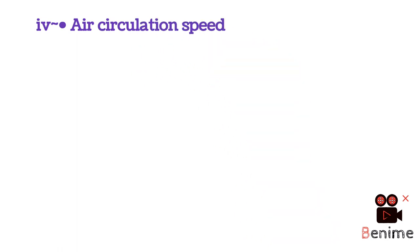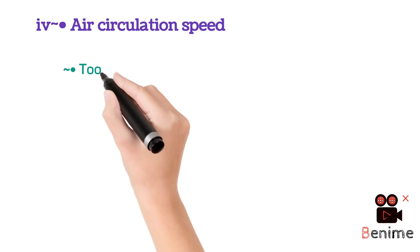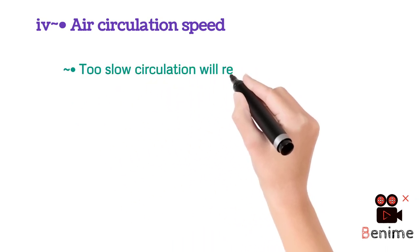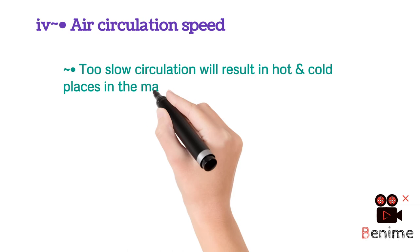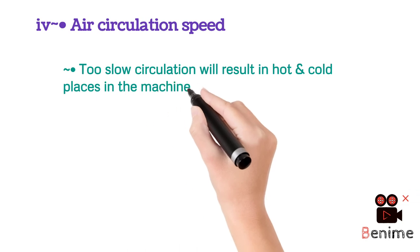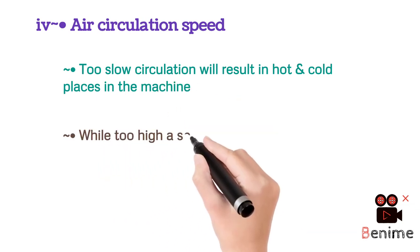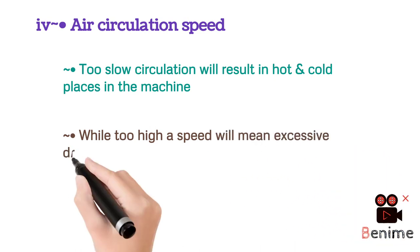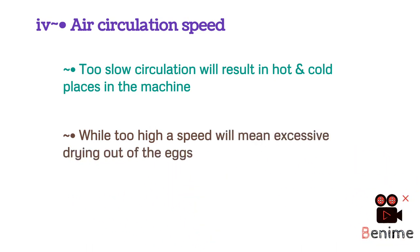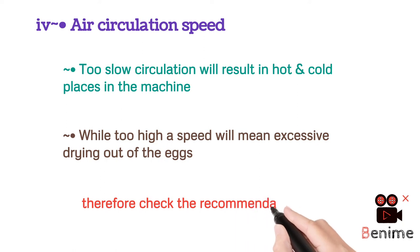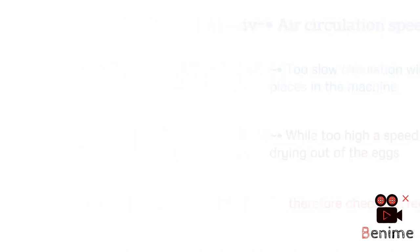Another cause of poor hatchability is air circulation speed. Too slow air circulation will result in hot and cold spots in the incubator, which should be avoided — even distribution of air must be ensured. While too high a speed will mean excessive drying out of the eggs. Therefore, check the recommended levels of air circulation speed and ensure even distribution of air throughout the whole incubator.